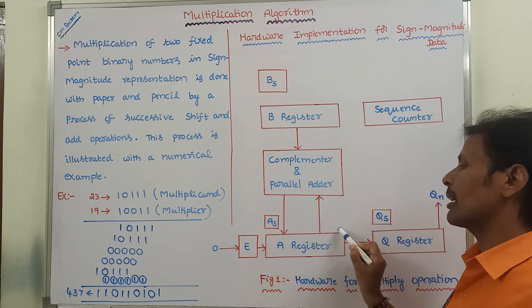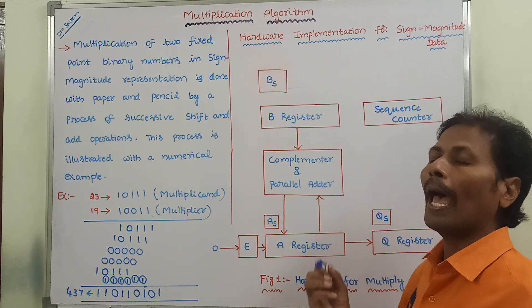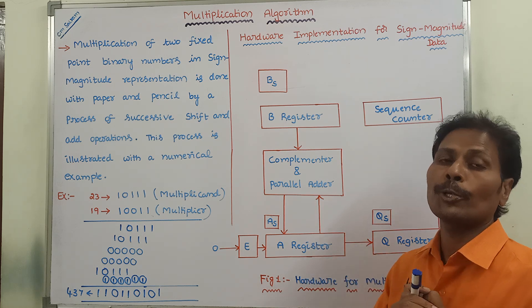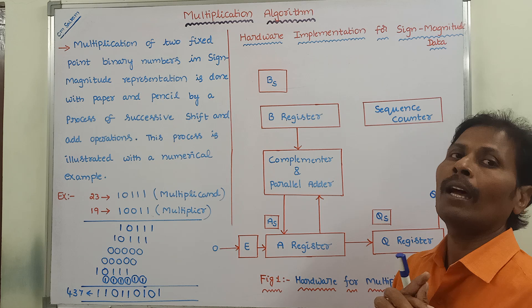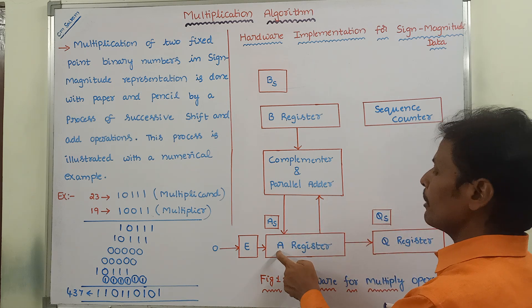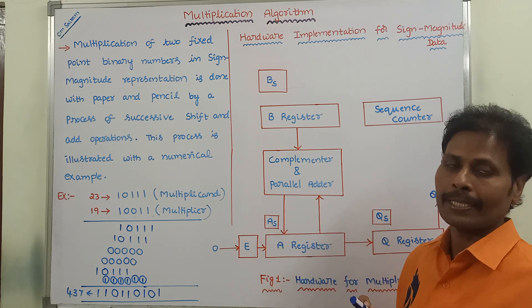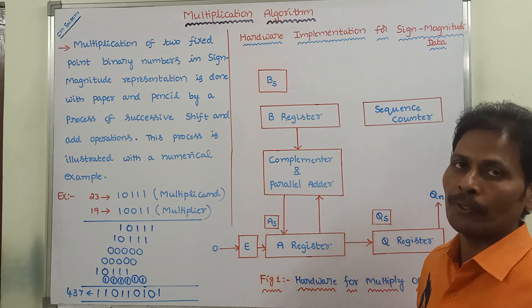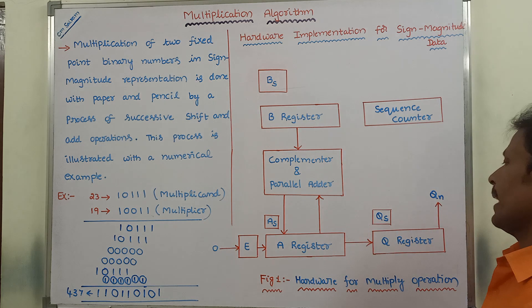The third register is called the A register, which is the accumulator register. This register is used for storing the intermediate result and the final result. Its sign bit is stored in a flip-flop called AS, which is a one-bit register. AS is used for storing the sign bit of the A register.